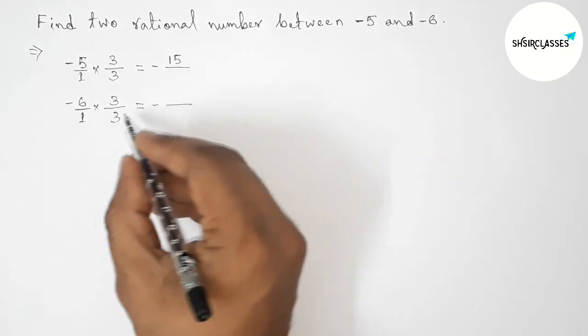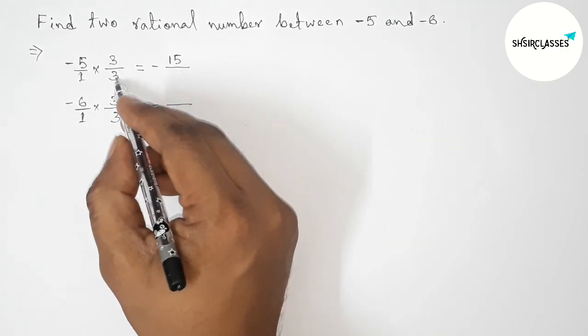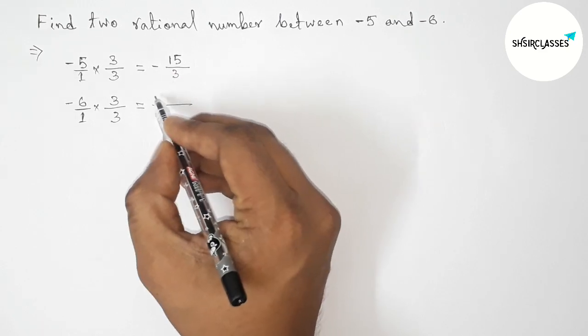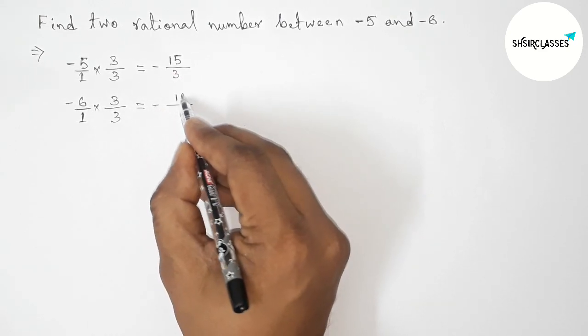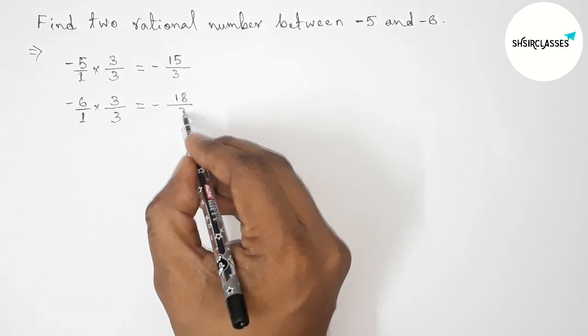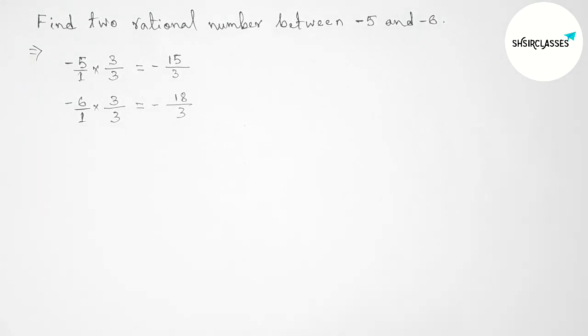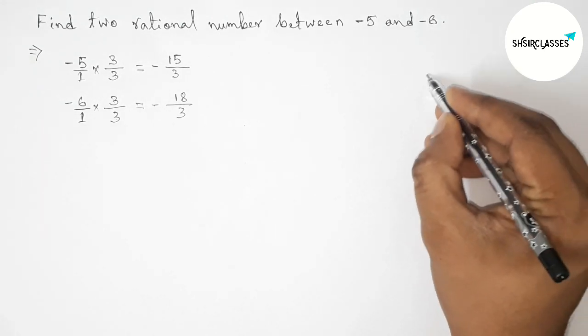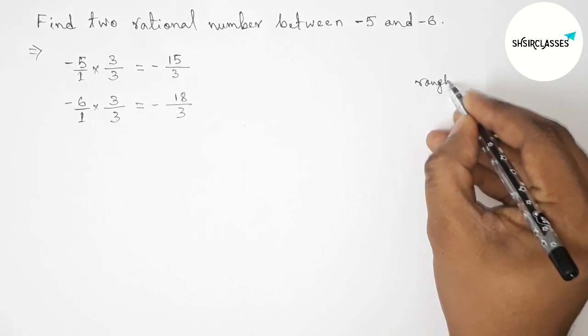So -5/1 × 3/3 = -15/3. And 6×3 is 18, so -6/1 × 3/3 = -18/3. Now let's discuss the important calculation.